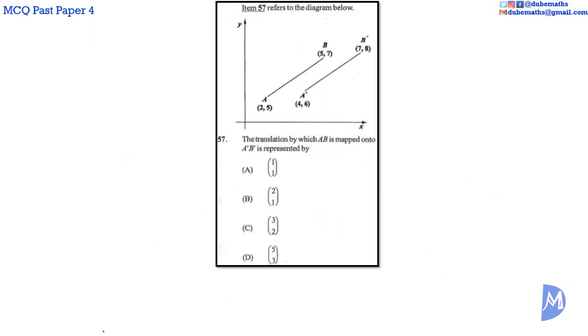Question 57. Let us consider point A. The X coordinate 2 is mapped onto 4, so 2 is added. And the Y coordinate 5 is mapped onto 6, so 1 is added. This is the same for B.